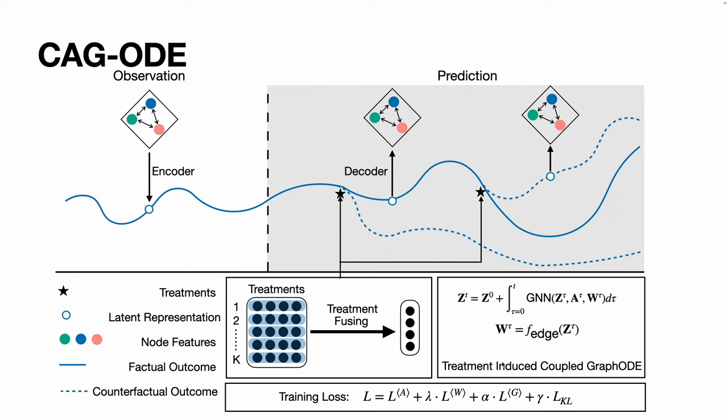As time-dependent confounders can result in a biased distribution of treatment assignments and imbalanced interference due to the evolving graph structure, CG-ODE utilizes two adversarial learning losses to ensure unbiased estimation of counterfactual outcomes.